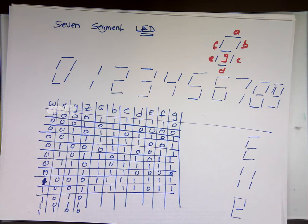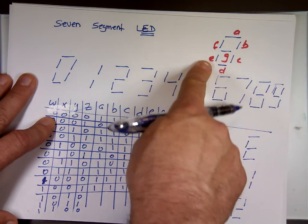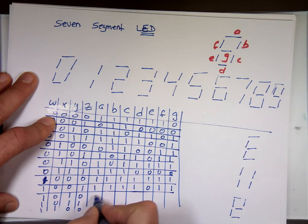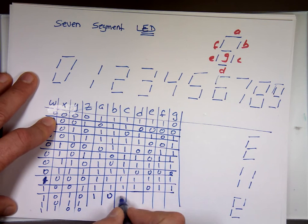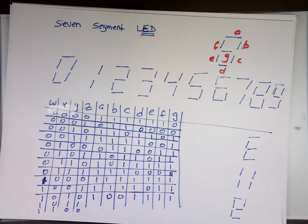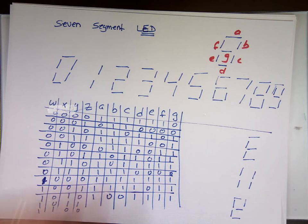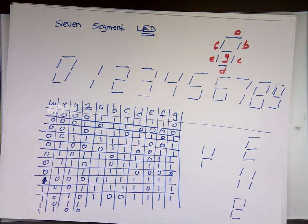Now, if I decide to do E, like this one, that means A, F, G, E, and D are on, right? B is out, C is out, and the rest are on. So I'm the designer. I can pick and choose what I want. I could have made it go like this. Freak people out. Then they know something is not right.